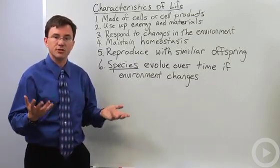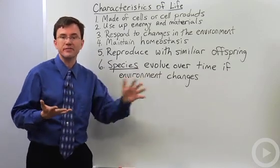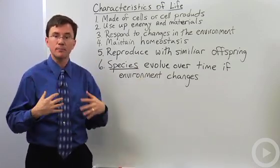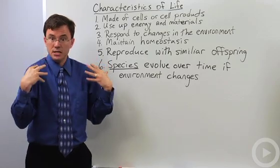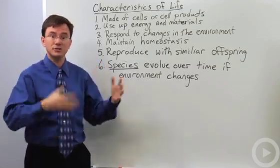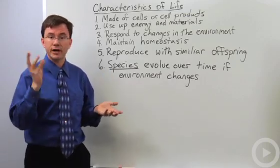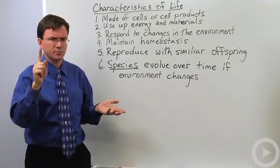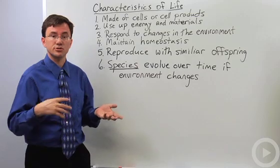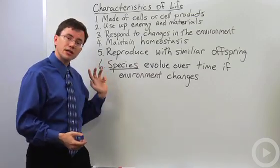Living things reproduce with similar offspring. When I reproduce, I have a mechanism of inheritance — a way of passing on my traits to my children — and I use DNA. Pretty much everything on this planet uses DNA. There are some examples of viruses, although some people argue against them being alive, and some viruses will also use RNA.